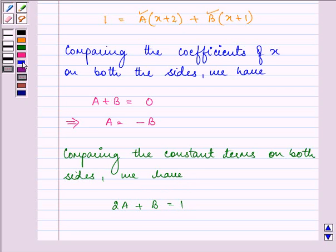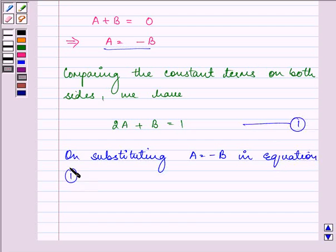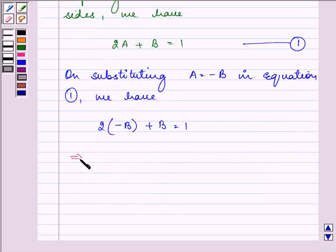Now on substituting the value of A is equal to minus B, we have 2 multiplied by minus B plus B is equal to 1, which gives us minus 2B plus B is equal to 1, which further implies minus B is equal to 1 and the value of B is equal to minus 1.